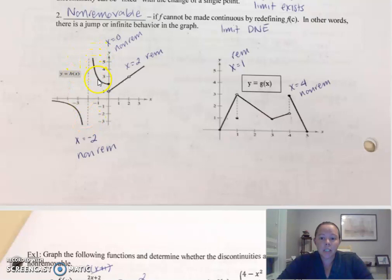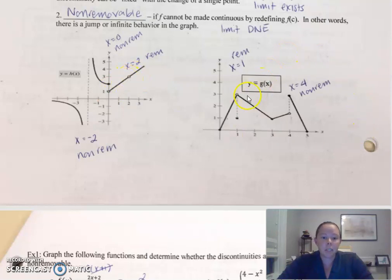Then you're continuous again until you get to zero, where you have another non-removable discontinuity — the limit does not exist. And then you're good to go again, you're continuous until you get to two, where you have a removable discontinuity because the limit exists. And then the same thing here. This is one where students get tripped up — it is not continuous, and that's a removable discontinuity because the limit exists.